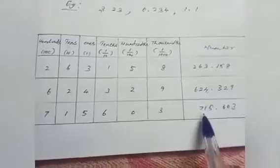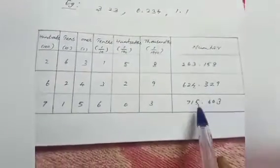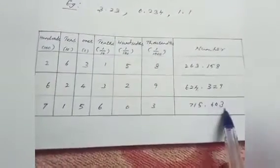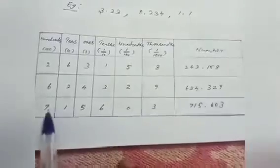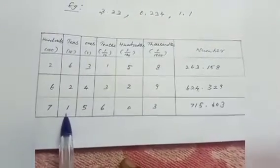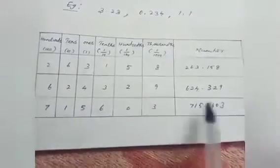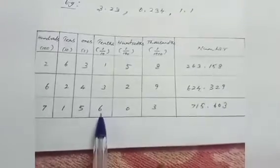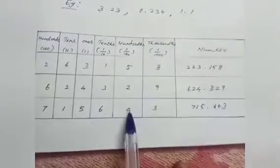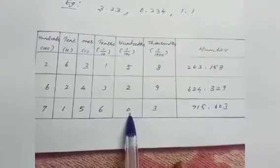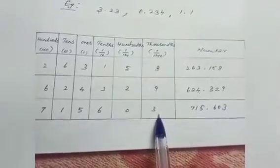The next two examples: 715.603. The place value of 7 is hundreds, 1 is tens, 5 is ones, 6 is tenths, 0 is hundredths, and 3 is thousandths.